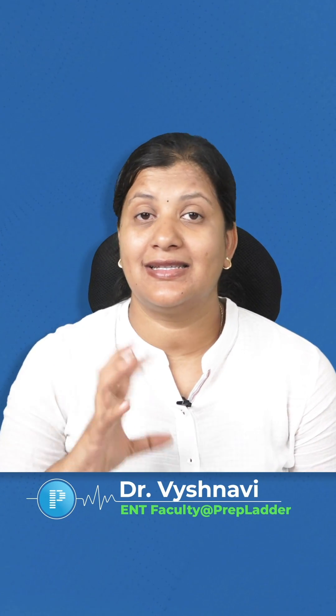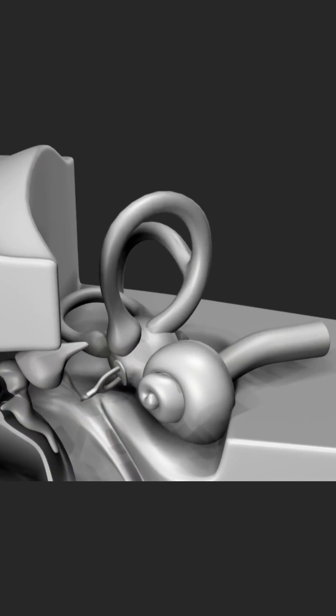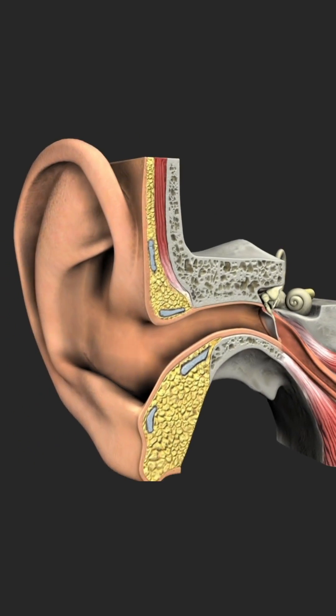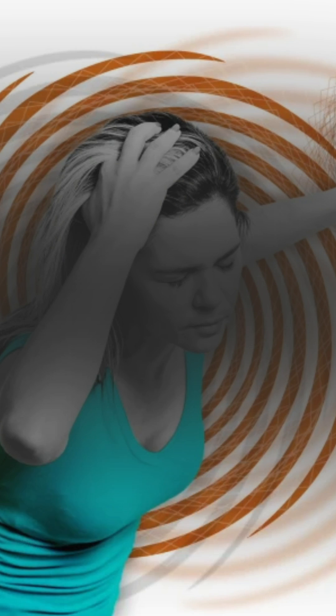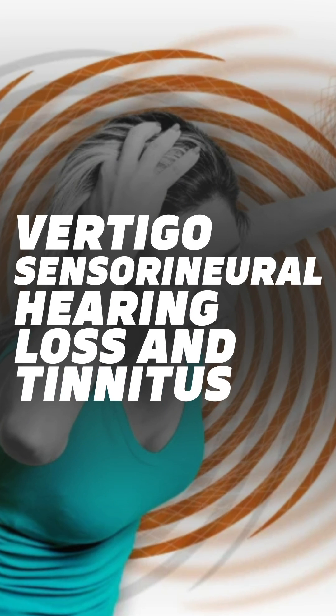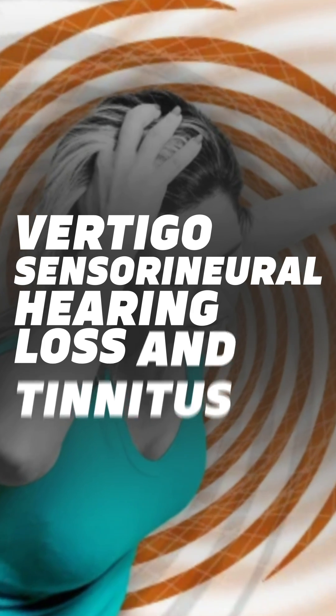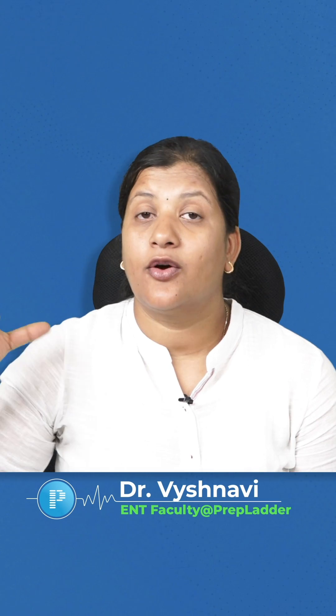Meniere's disease is a disease of the inner ear where there is excessive endolymph production or decreased reabsorption, resulting in symptoms of vertigo, sensorineural hearing loss, and tinnitus.